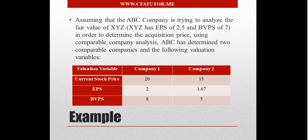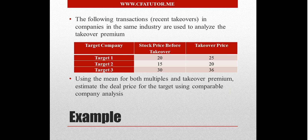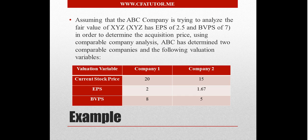Using comparable company analysis, ABC has determined two comparable companies with the following valuation variables. We have Company 1 and Company 2, their current stock price, their EPS and book value per share — so we're using two multiples: price-to-earnings and price-to-book value. Then we also have a set of recent takeover transactions. We'll focus on the comparable company side first and then move on to the recent takeover transactions.